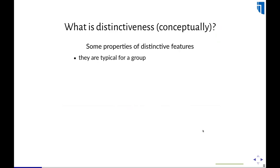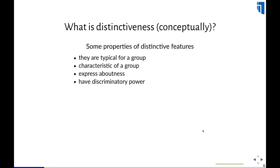What are the conceptual properties of distinctive features? You can distinguish different aspects: they can be typical for a group, but that's not enough — they should also be characteristic of the group, and in some cases express a certain 'aboutness' of the texts you're looking at, showing what those texts are really about. They usually have some discriminatory power, so you can use them to distinguish one group from another. That's why feature weights from a classifier can be an interesting way of finding distinctive features. If you find distinctive words for one group and encounter them in the opposite group, they would appear salient or surprising.